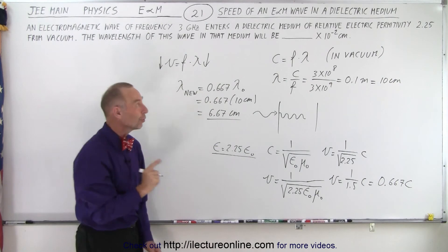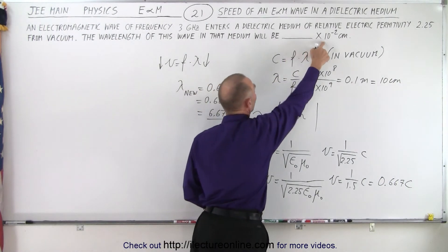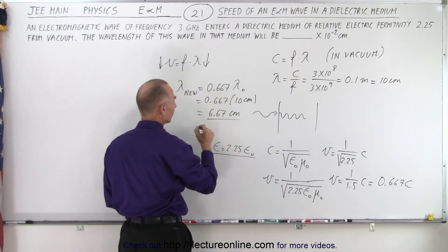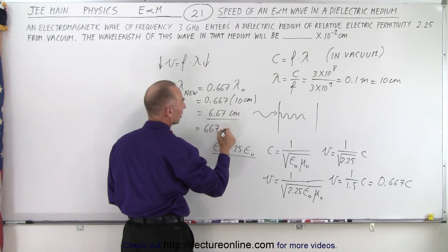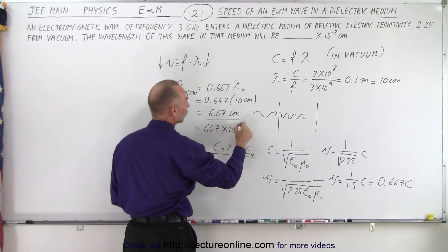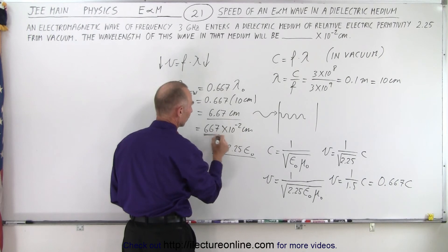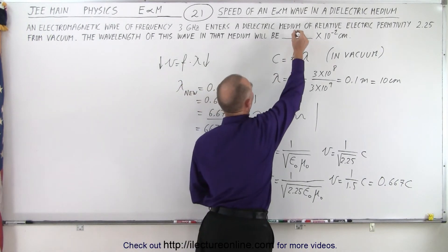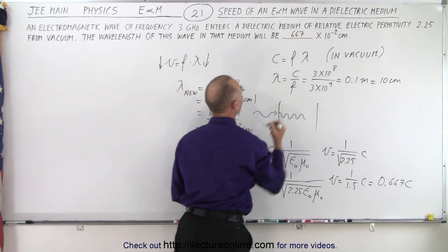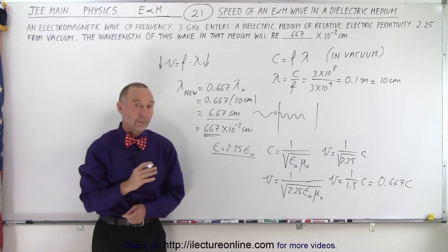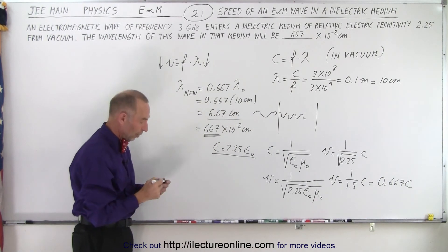Now however notice that the form of the answer is times 10 to the minus 2 centimeters which means that this is equal to 667 times 10 to the minus 2 centimeters. And so they're looking for the number 667 to go in there. So that would be the proper answer for this particular question.